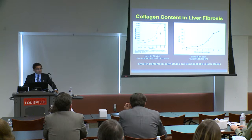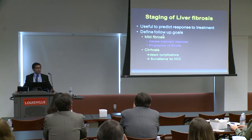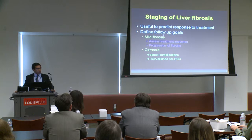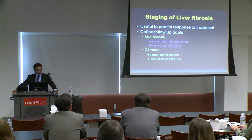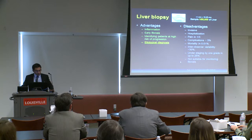The early changes are difficult to detect, whereas the later changes are very easy to detect. Staging of liver fibrosis is important because it is useful to predict response to treatment — stage 2 fibrosis is usually an indication for antifibrotic treatment, whereas stage 4 fibrosis or cirrhosis is an indication for surveillance of complications. It is also useful to define follow-up goals, and for cirrhosis we always do surveillance for hepatocellular carcinoma as well as portal hypertension and bleeding varices.